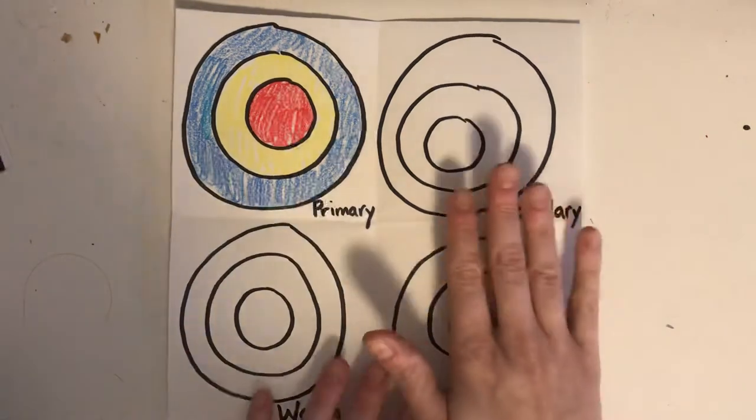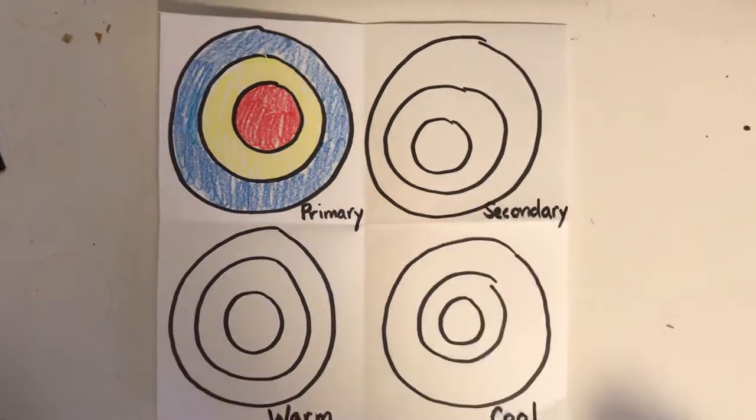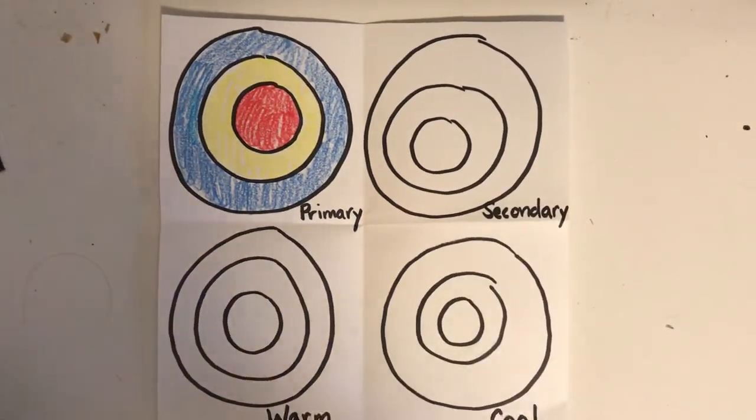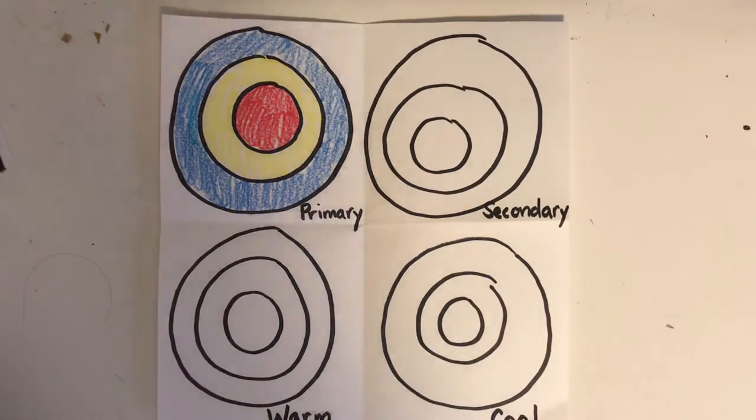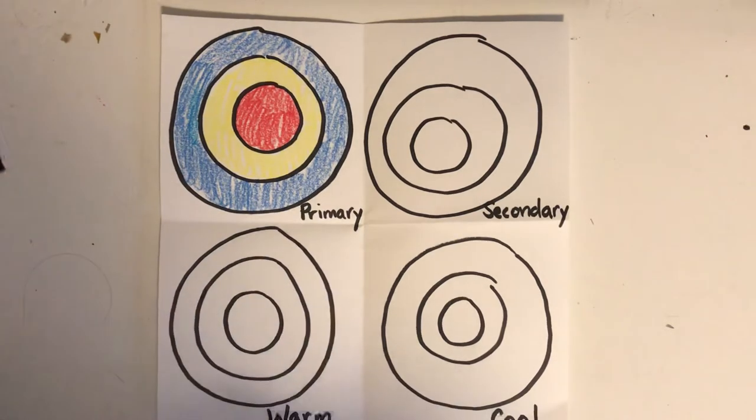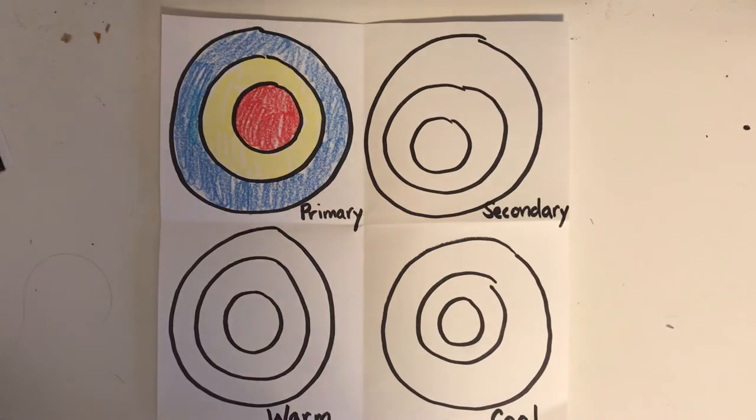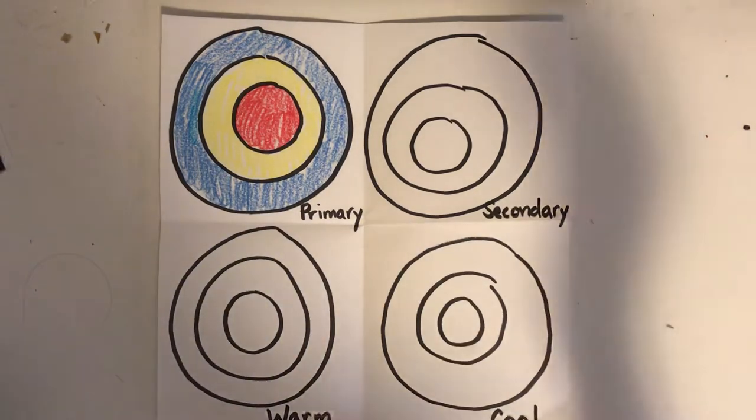Now we're going to do secondary colors. This word is probably the one that's going to be the most unfamiliar. But you actually do know these colors. Secondary colors are the colors that we get when we mix the primary colors. So you know that when we mix, for example when we mix red and yellow, we get orange.